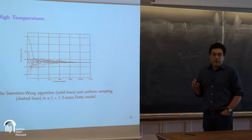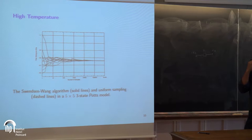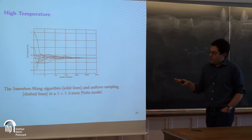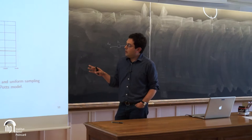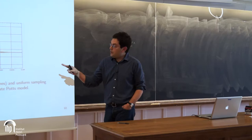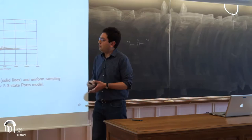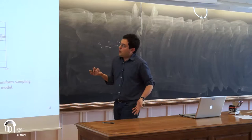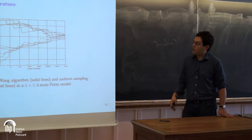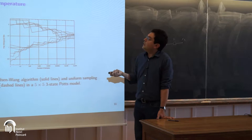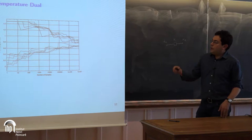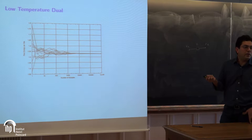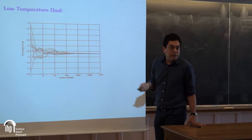Before I start, I show four slides to see the contrast between high and low temperature. This is a five by five, three-state Potts model — q equals 3. At high temperature, we use uniform sampling and Gibbs sampling / Swendsen-Wang to draw samples. This is a very small model; you can do it brute force, and you see good convergence after a couple of thousand samples. At low temperature, convergence is very bad — up to 10^7 samples, nearly the size of the state space, you see no convergence. In the dual graph at high temperature convergence is bad, but at low temperature convergence gets better.